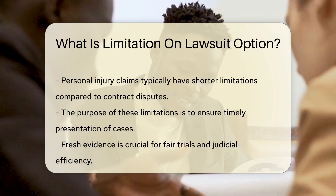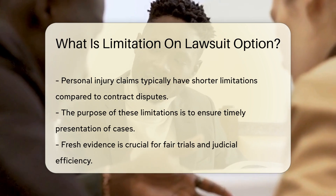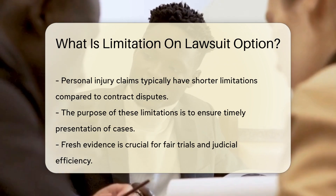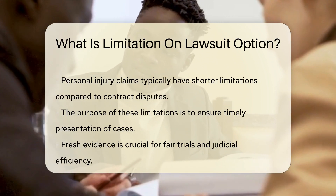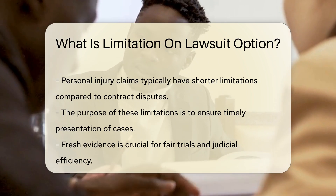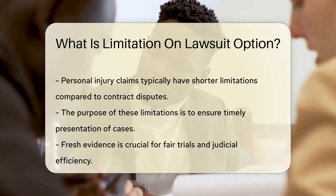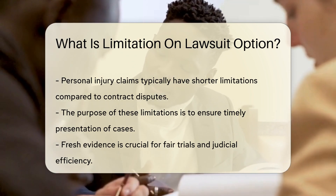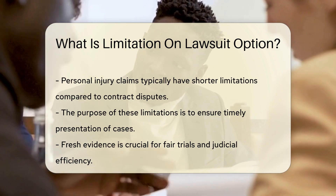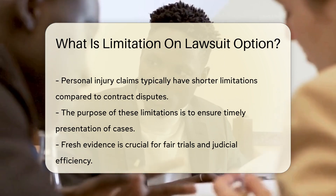Different types of claims have different limitations. For instance, personal injury claims often have shorter time limits than contract disputes. The rationale behind these limitations is to ensure cases are brought forward while evidence is fresh.